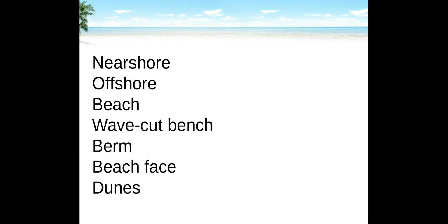The nearshore extends seaward from the low tide shoreline to the low tide breaker line. Offshore is the zone below low tide breakers. Beach is the wave-worked sediment deposit of the shore area — the area above the shoreline, often called the recreational beach.